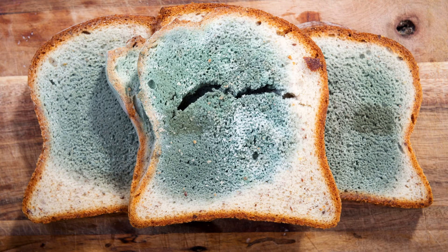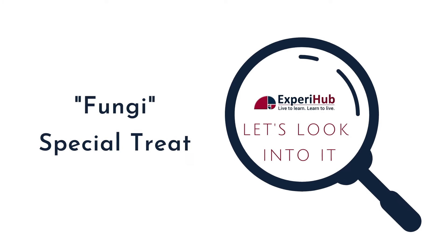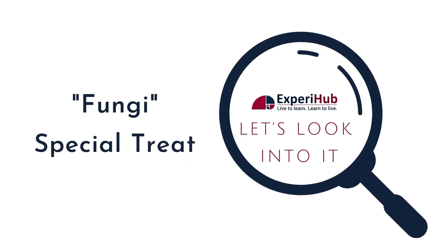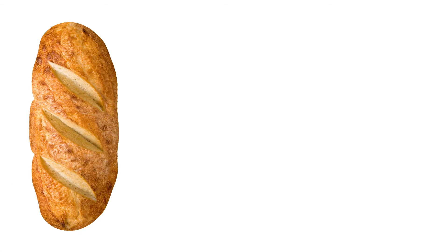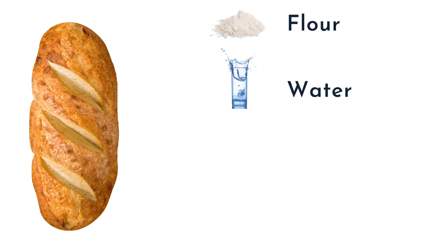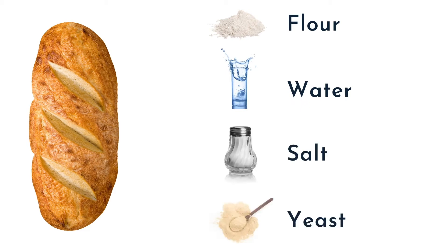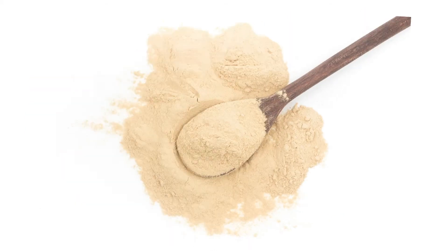imagined a rotten piece of bread landing on her plate. But Puneet didn't intend to give stale sandwiches to his mother. So what exactly did Puneet mean when he said he made a fungi special treat? Let's look into it. Bread is the product of baking a mixture of flour, water, salt, yeast, and other ingredients.